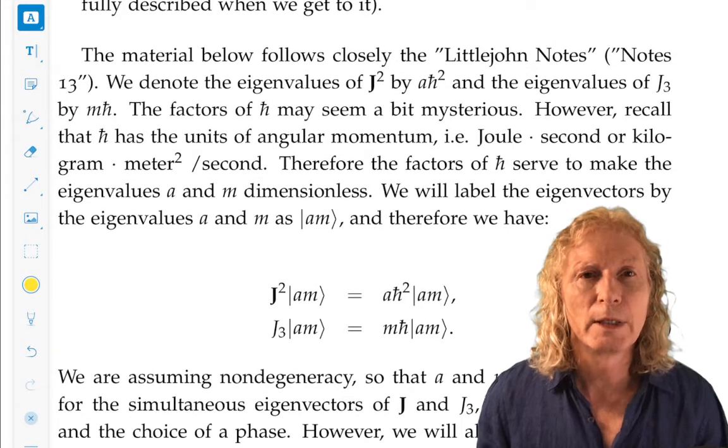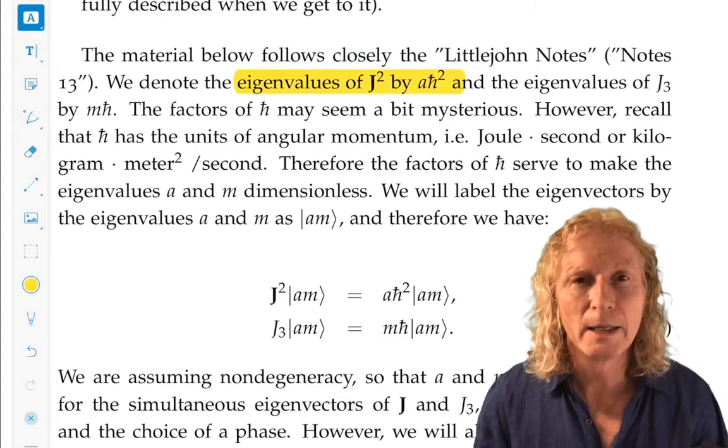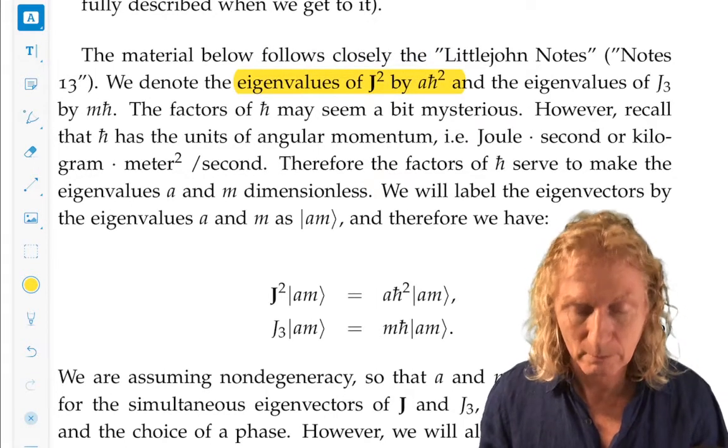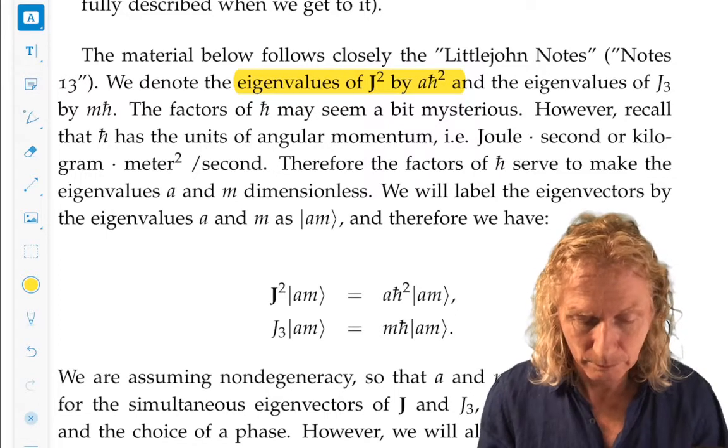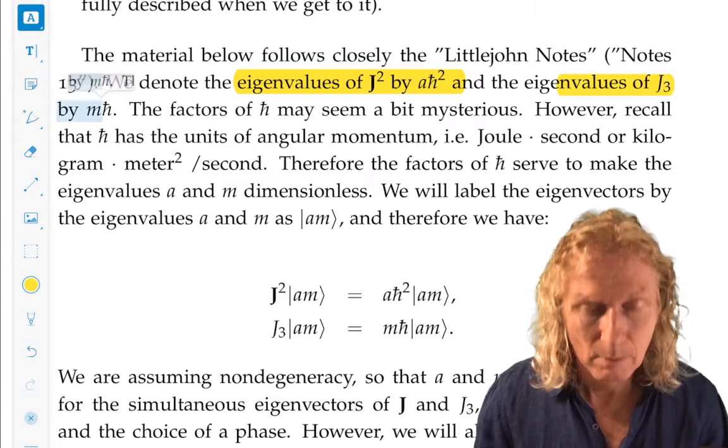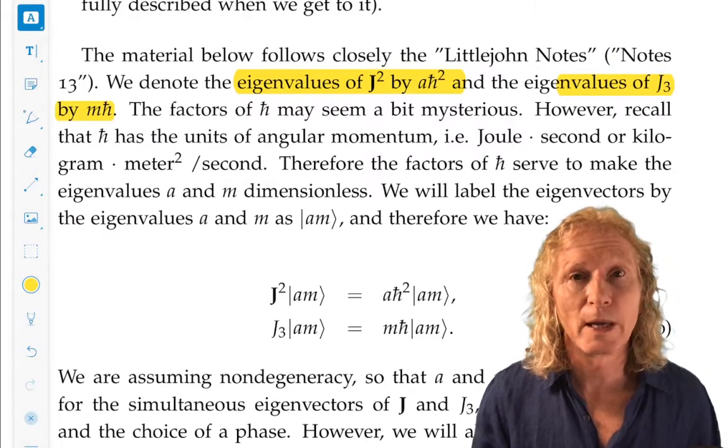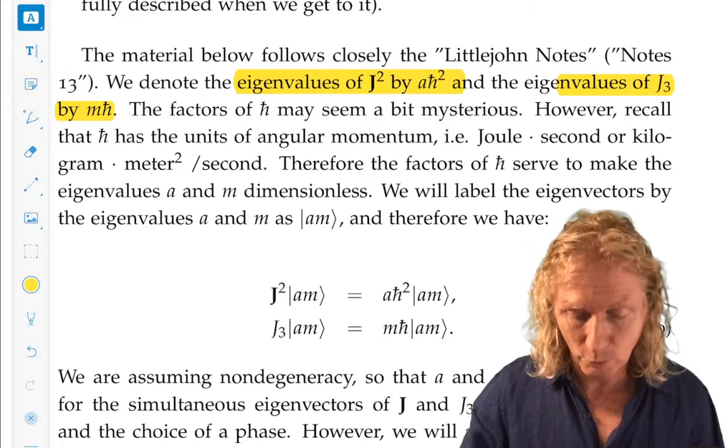We're going to denote the eigenvalues of j squared by a h bar squared, where a is a real number, and the eigenvalues of j3 by m h bar. So the question is, where do these factors of h bar and h bar squared come from?